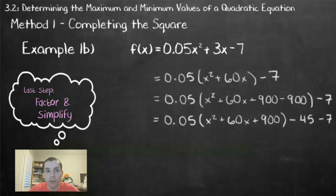In our final step in completing the square, we factor that trinomial. Again, it's a perfect square trinomial. It will factor into x plus 30 squared. And then we combine our two constant terms at the end to a value of negative 52.